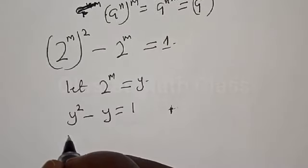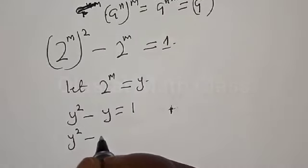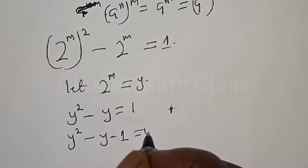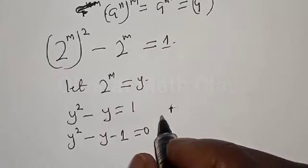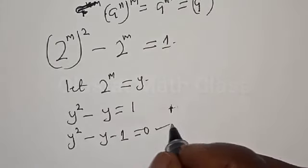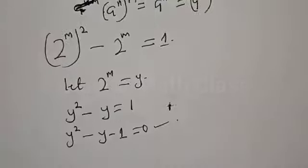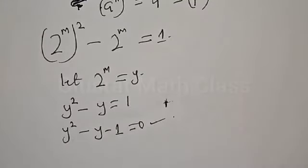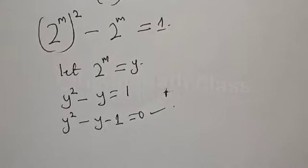Then we have y squared minus y minus 1 equal to 0. This is a quadratic equation. We can solve this by using the quadratic general formula.